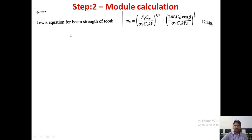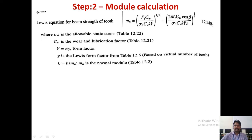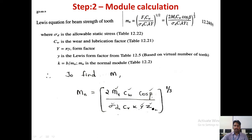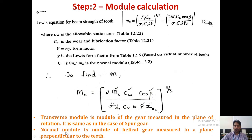Step 2: Module calculation using the Lewis equation for helical gear. The normal module Mn is given by: Mn = [2MT × CW × cos(beta) / (sigma_D × Cv × K × Y × Z)]^(1/3). In this problem, teeth Z is known, so Y is also known. K is known. But CW depends on diameter, which is unknown, so assume a value. The normal module Mn equals M × cos(beta), where M is the transverse module measured in the plane of rotation, same as for spur gears.